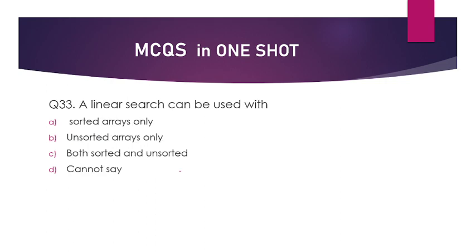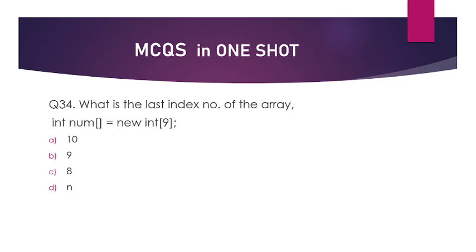Next question. A linear search can be used with sorted arrays only, unsorted arrays only, both sorted and unsorted arrays, or cannot say? The answer is option number C — both sorted and unsorted arrays.